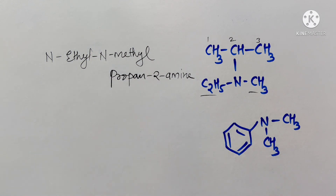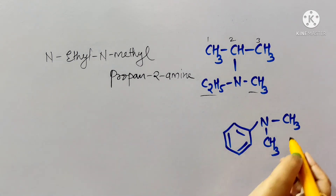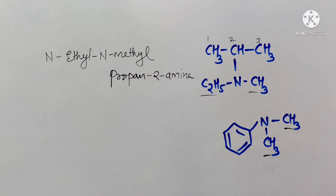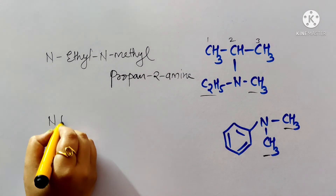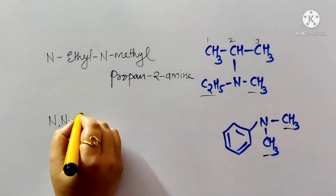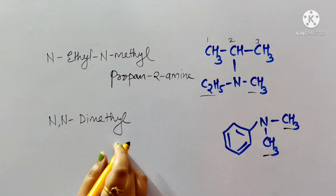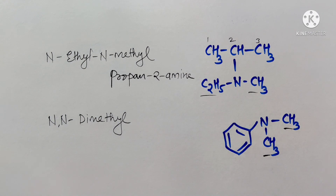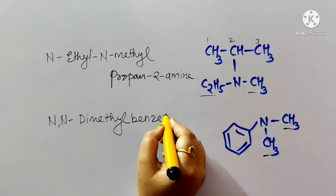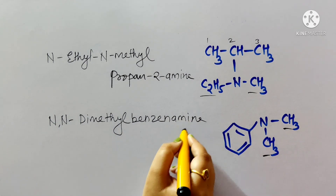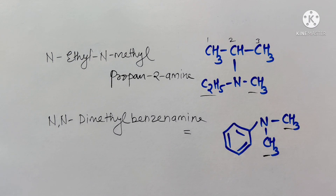For a tertiary amine where two methyl groups are attached to aniline (nitrogen), the compound is N,N-dimethylaniline. For the IUPAC name, both methyl groups are N,N-substituents attached to benzenamine, giving N,N-dimethylbenzenamine. These are the IUPAC names for primary, secondary, and tertiary amines.